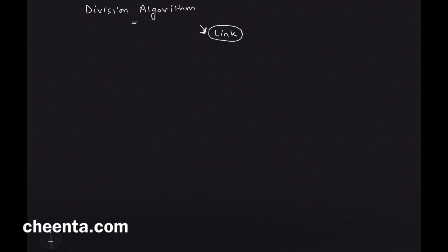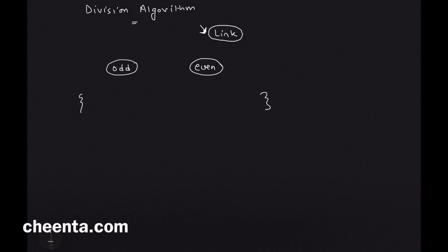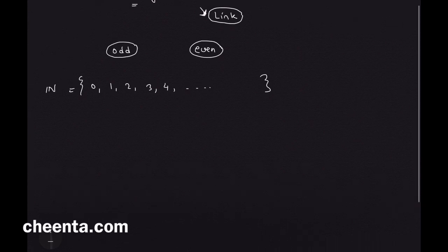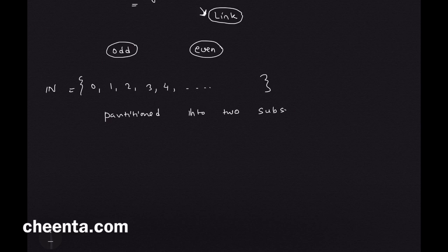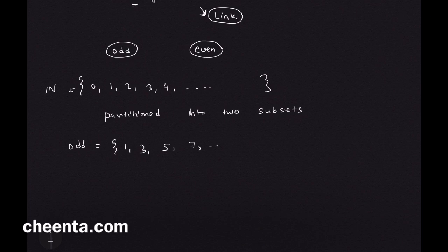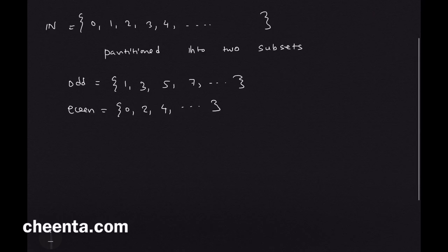What is the division algorithm? The simplest example of its application is the distinction between odd and even. If we take the set of all non-negative whole numbers — that is 0, 1, 2, 3, 4, etc. — let's call this set capital N. This set can be partitioned into two subsets: the subset of odd numbers, which includes 1, 3, 5, 7, and so on, and the subset of even numbers, which includes 0, 2, 4, etc.